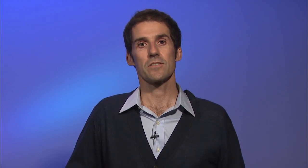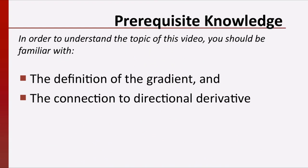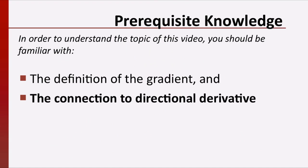The gradient is an operation that takes in a scalar function and outputs a vector field. Many scalar quantities, such as temperature and density, have time derivatives that exhibit both a magnitude and a direction. Therefore, it makes sense that we would need an operation that turns scalar functions into vector fields. Before watching this video, you should be familiar with the definition of the gradient, and its connection to the directional derivative.